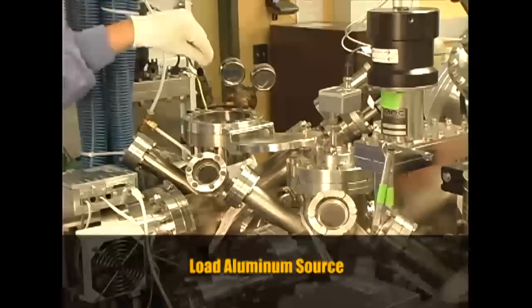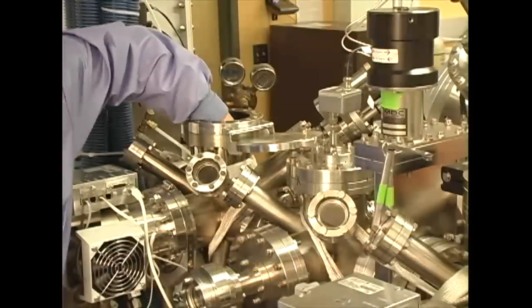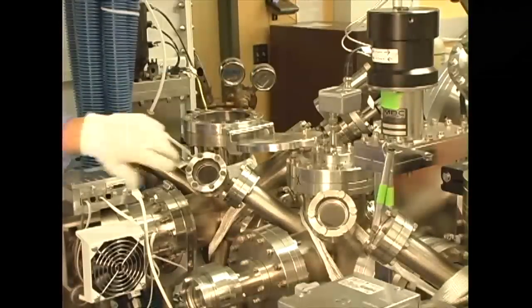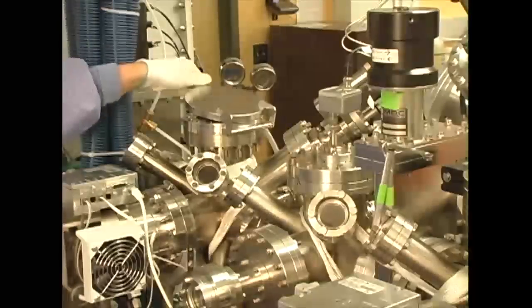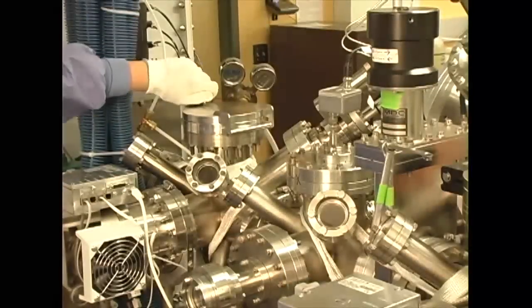Before we build a device, we need to load the aluminum into the metallics chamber. The lid can be opened and a piece of metal can be installed. The system is sealed. The entire chamber is pumped down and then refilled with nitrogen to atmospheric pressure.